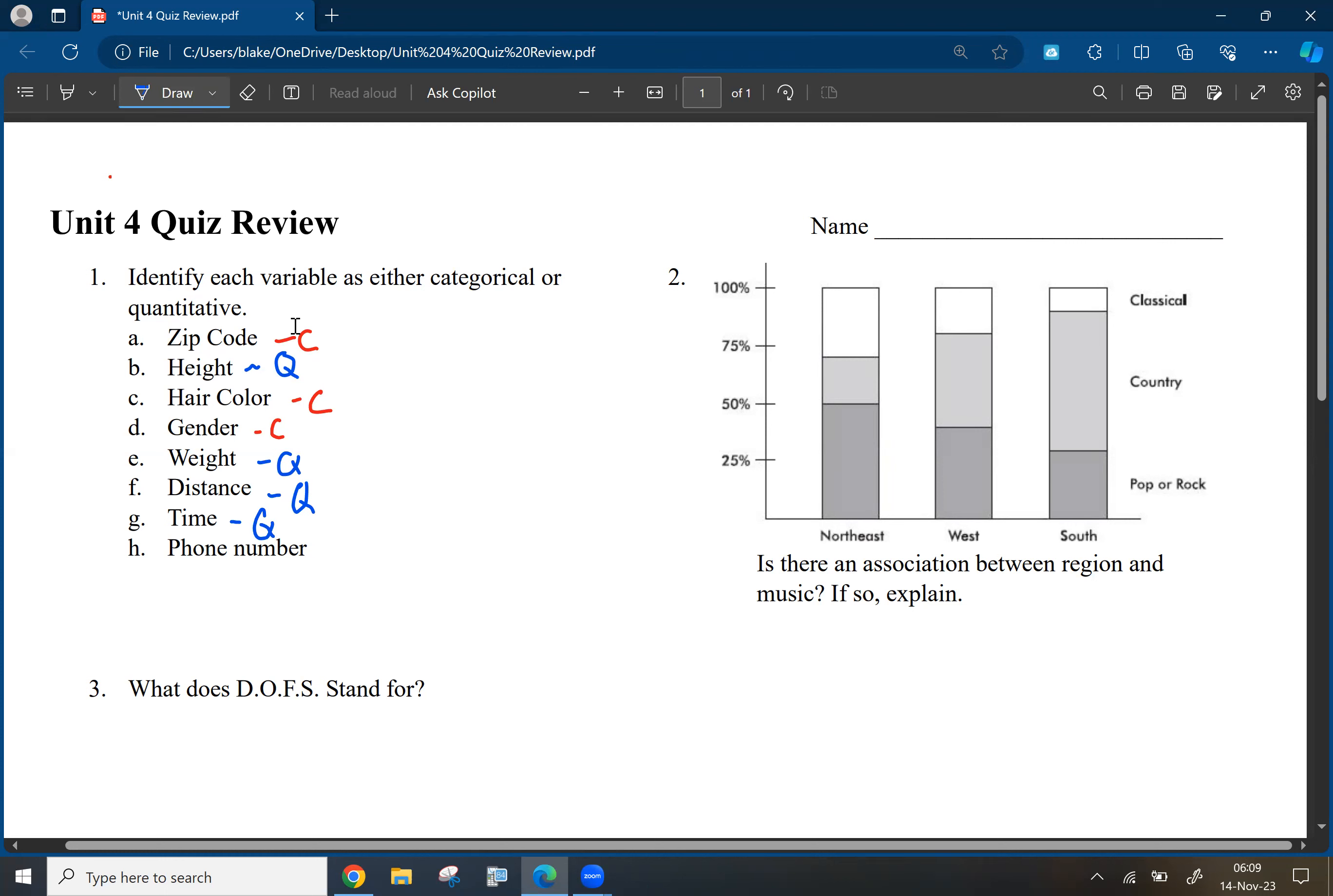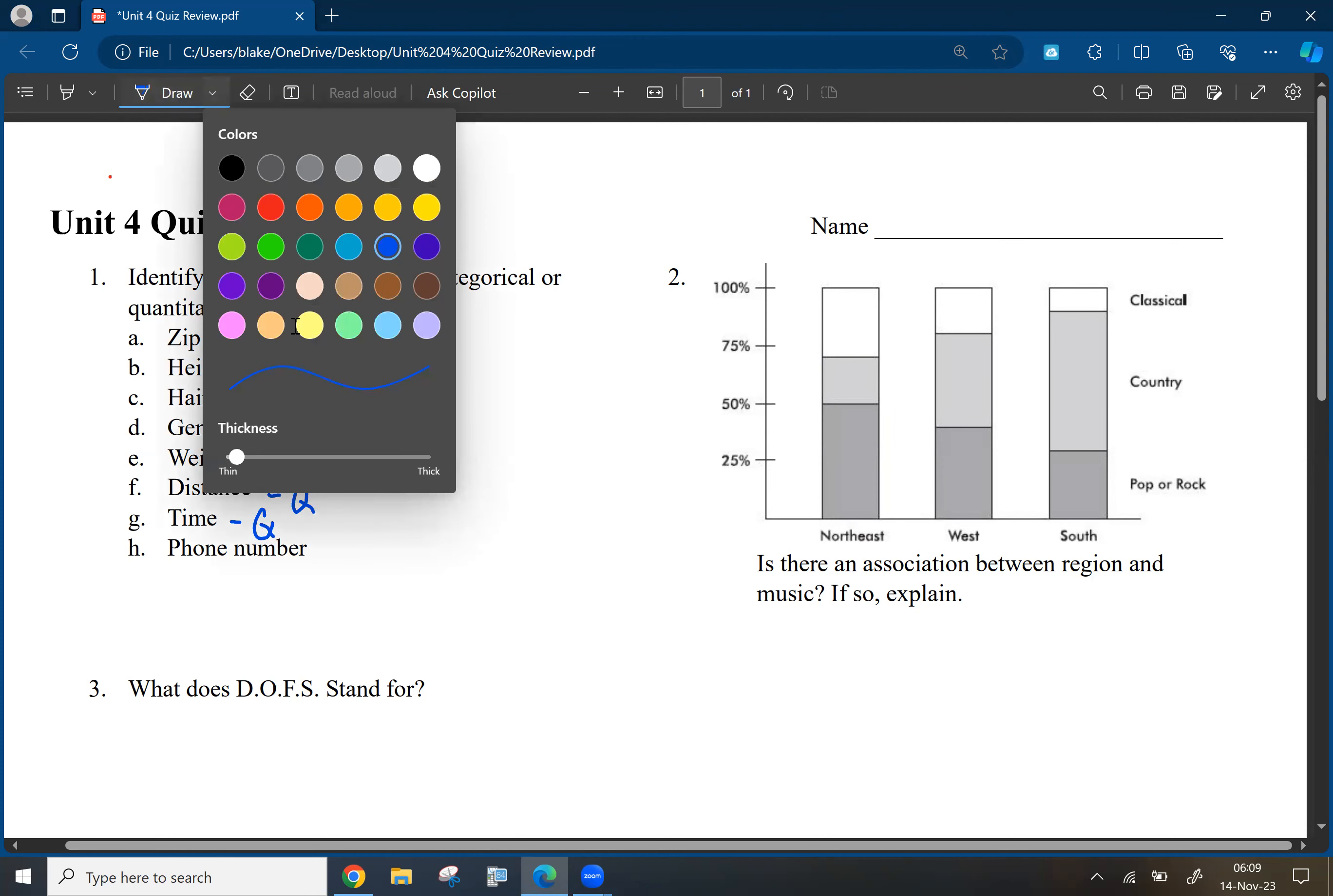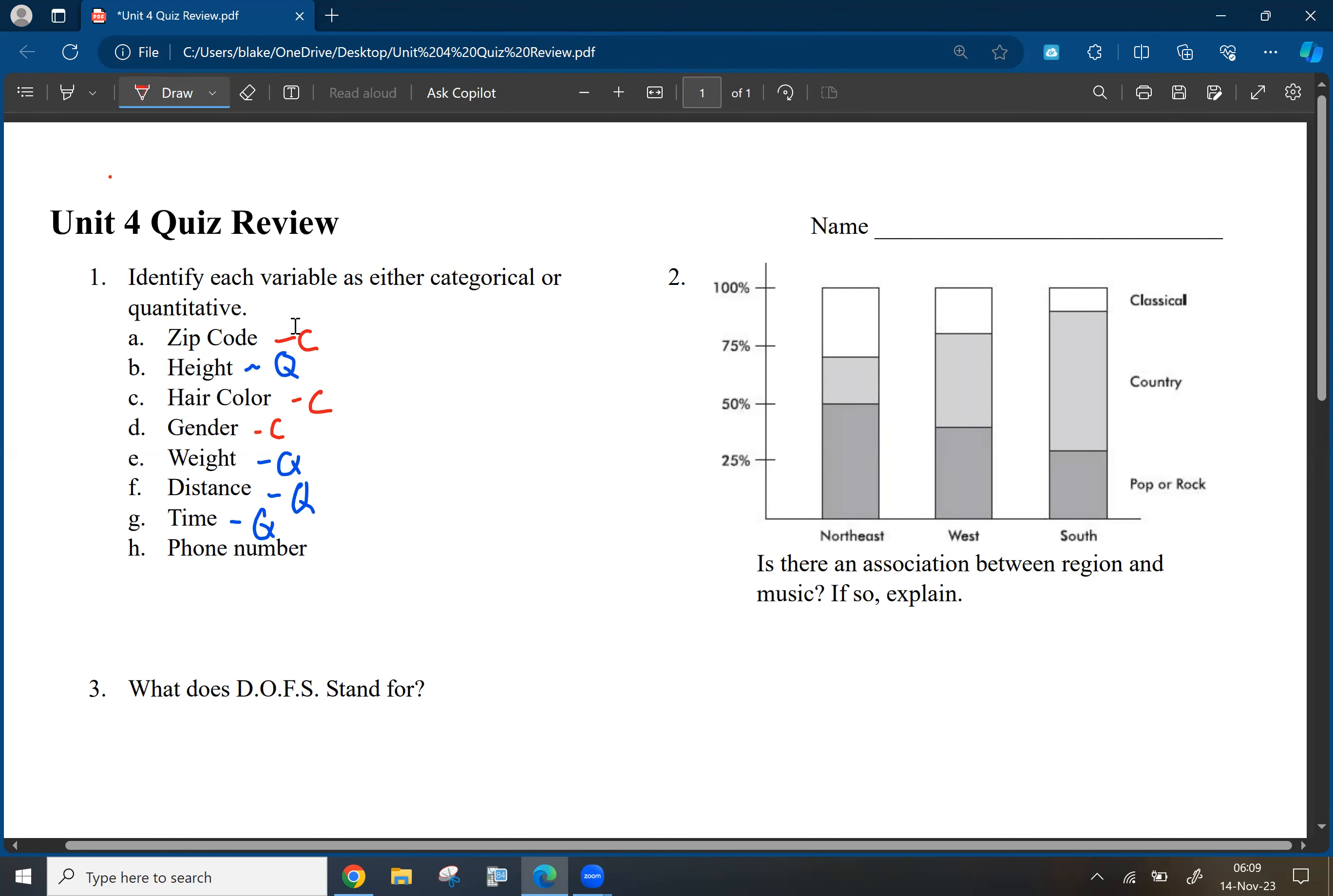And phone number. Phone number is a numerical value. But again, it doesn't count anything. It doesn't measure anything. It's just essentially a label for your phone, right? So that one is categorical.